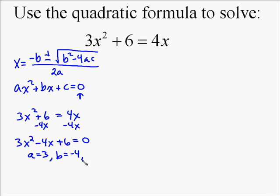So what you really need to remember is that a is what's in front of the x squared, b is what's in front of the x, and c is the number. So you get a equals 3, b equals negative 4, and c equals 6.